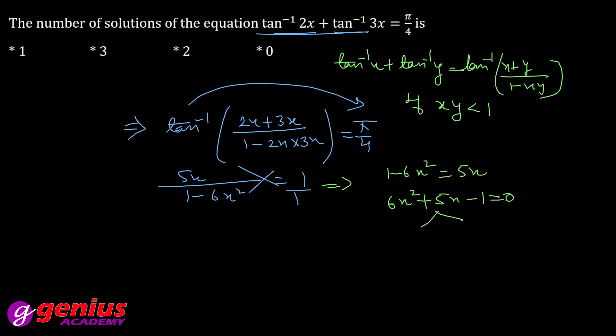We will split here. 6 times 1 is 6 plus 5. This is plus and this is minus. Divide by 6. The final value of x is minus 1 and plus 1 by 6. There are two solutions. Now, we have to check this condition. What is the condition? x is equal to minus 1 and x is equal to 1 by 6.